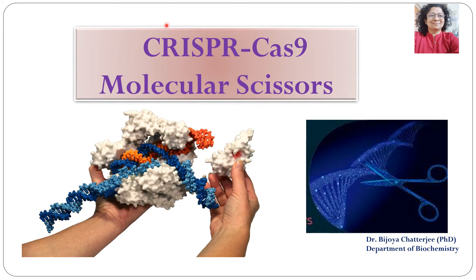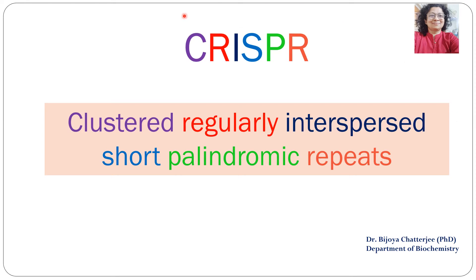Hello everyone, today we shall discuss about the CRISPR-Cas9 system, which is also known as the molecular scissors. Let us see why this system is suddenly in the news everywhere. Before we begin about the details of CRISPR, let us see the expanded version of this acronym. CRISPR stands for Clustered Regularly Interspersed Short Palindromic Repeats.